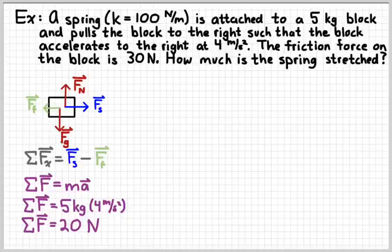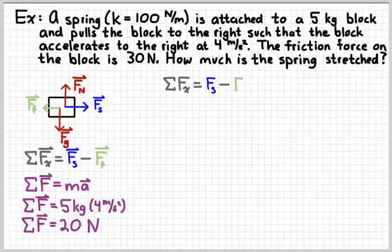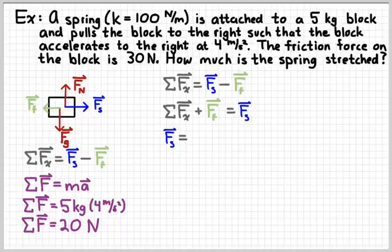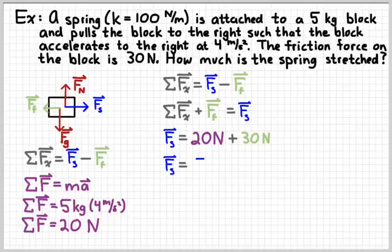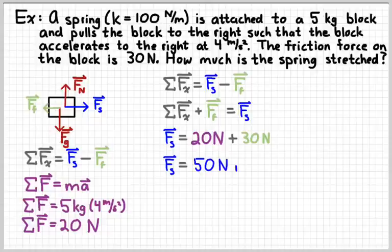So now that I know what the net force is, I can use my free body diagram and solve for the missing spring force. And so the spring force would be the sum of the net force and friction. And so plugging in my numbers, we found the net force to be 20 newtons. We knew the force of friction was 30 newtons. And so that means that the spring is exerting 50 newtons of force.